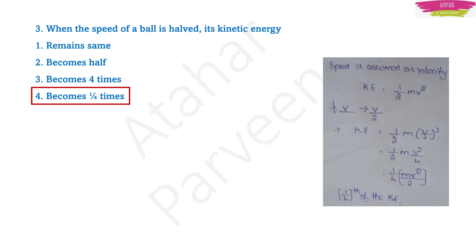In place of v you write v by two whole squared, and you will get v squared upon four. Once you get v squared upon four, take one by four outside. You will get one by four times half mv squared inside the bracket. So your kinetic energy becomes one by four times half mv squared. Your initial kinetic energy was half mv squared, and your final kinetic energy becomes one by four of the initial kinetic energy.